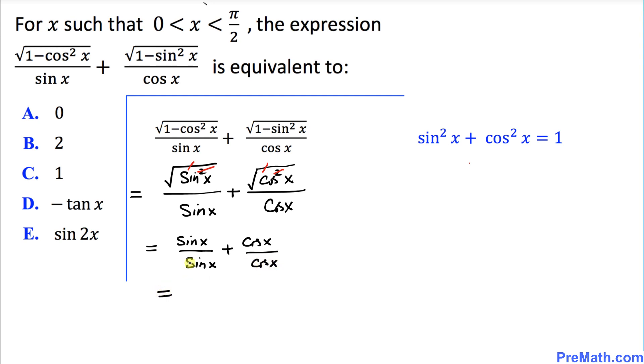We can see sin x divided by sin x is the same as 1. Likewise, cos x divided by cos x is 1 as well. So that gives us 2.